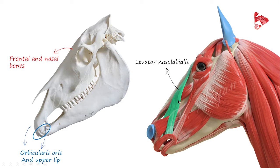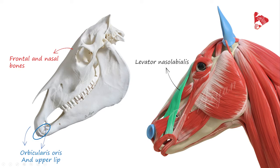This muscle is divided into two parts: the first part inserts to the orbicularis oris, and the second inserts to the upper lip and slightly to the lateral wall of the nose. The function of the levator nasolabialis is to elevate the upper lip and enlarge the nostril opening. We can also note how the caninus muscle passes between the two parts of the levator nasolabialis.